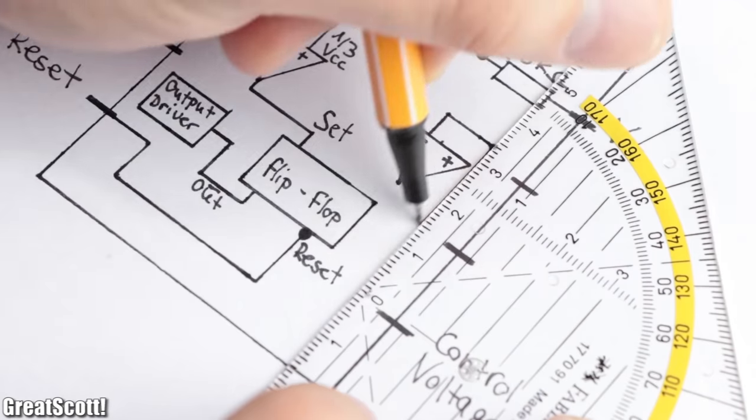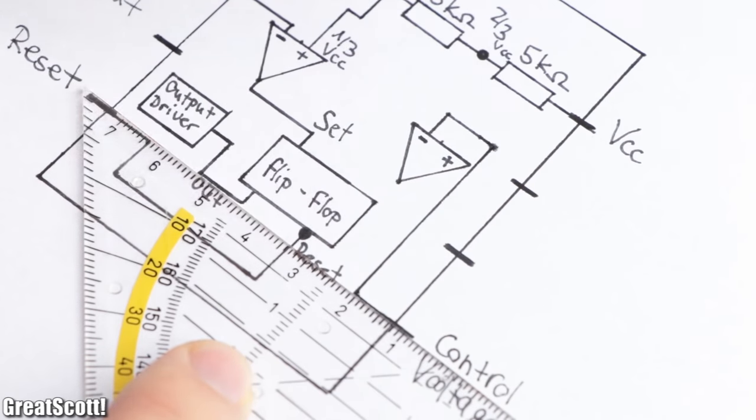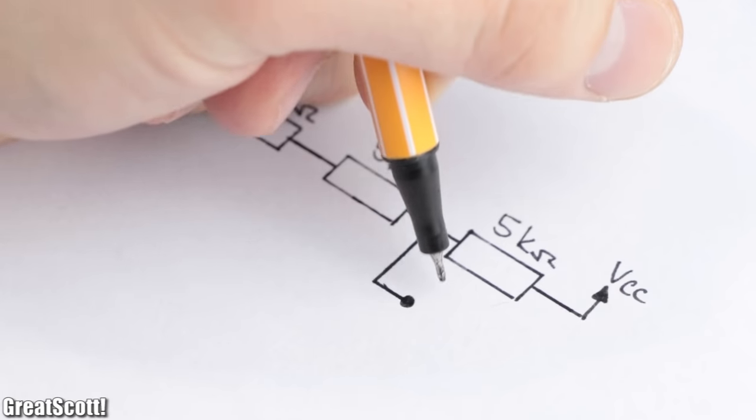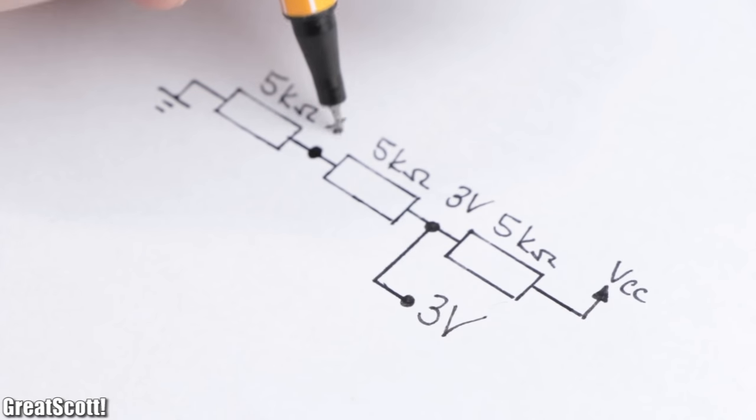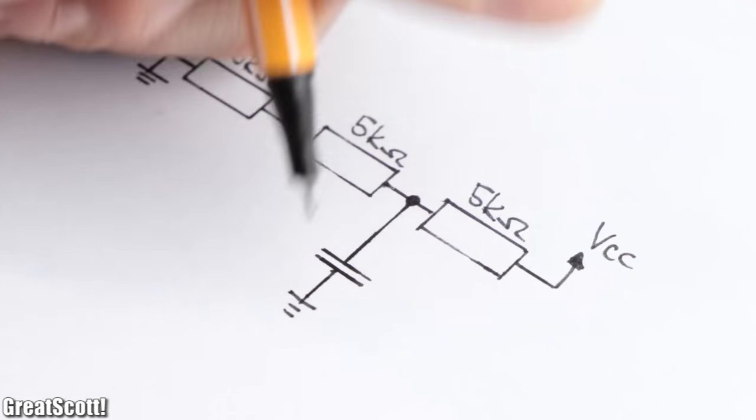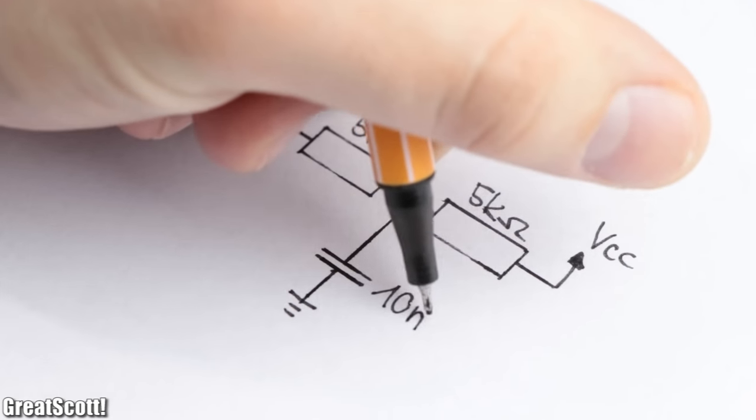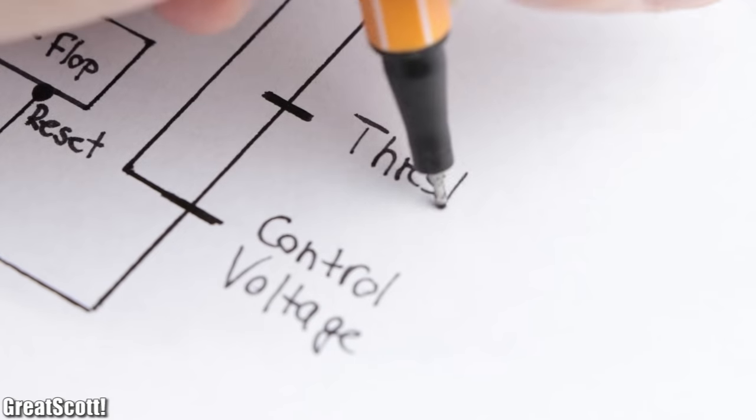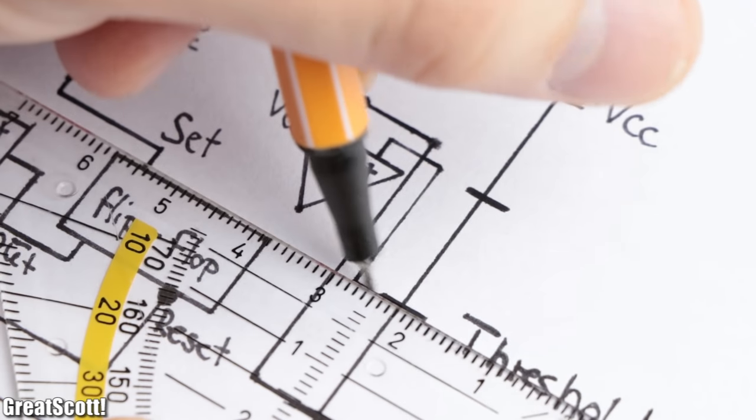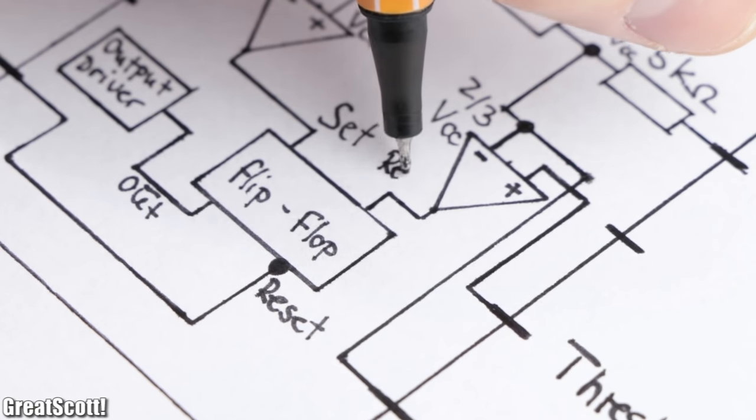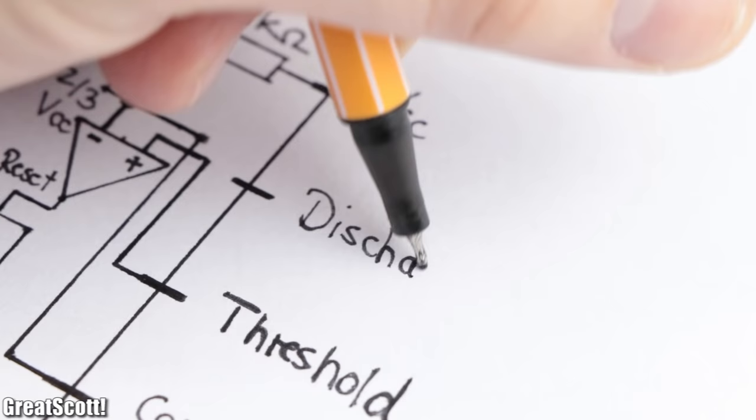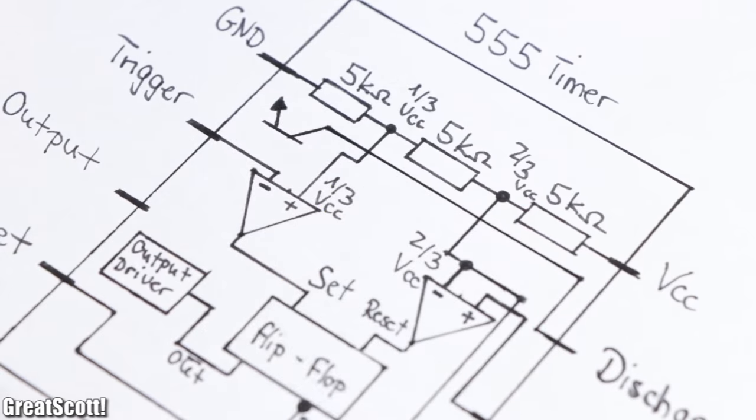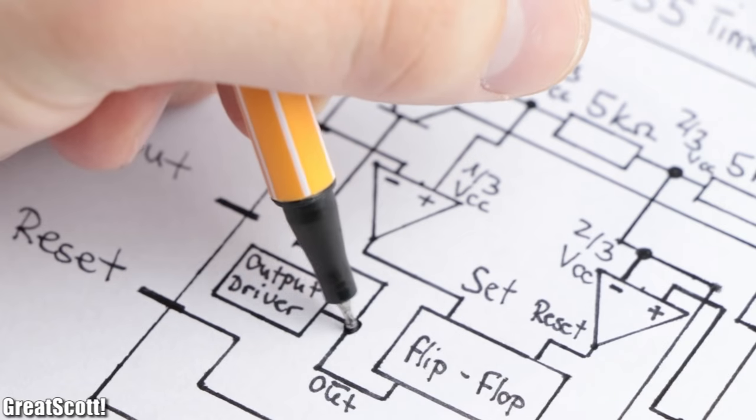Pin 5 is the control voltage which not only connects to the negative input of the second comparator, but also to the voltage divider's two thirds potential of the supply voltage. You could either supply voltage to this pin in order to change the reference voltages for the comparators, or you could simply hook up a 10 nanofarad capacitor in order to stabilize the reference voltages, which is definitely more common in 555 timer circuits. Pin 6 is the threshold pin which connects to the positive input of the second comparator, whose output connects to the reset pin of the flip-flop. Last but not least we got the discharge pin which directly connects to the collector of a bipolar junction transistor. Its emitter connects to ground and base connects to the output of the flip-flop.